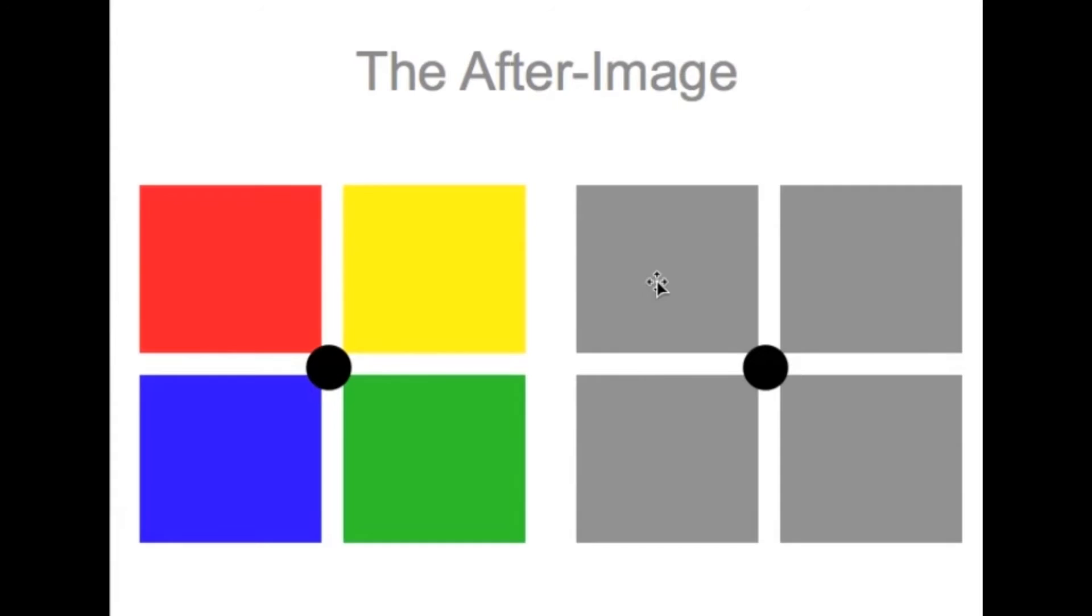So understanding this, if you're looking at this and then you transfer your eye over here, you're going to see green as an after image on the gray. And if you're looking at the yellow, you're going to see a little bit of violet as an after image on the gray.